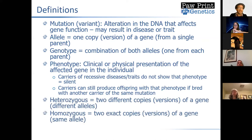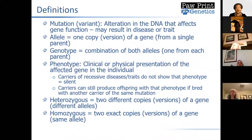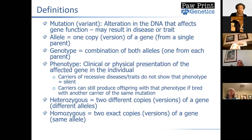Then we have heterozygous and homozygous. These are different ways of discussing the alleles or different versions of the gene that a particular individual has inherited. If someone received two exact copies of the same gene, we refer to that as being homozygous. If they receive two different copies of the gene, then that would be heterozygous — they would have different versions or alleles.